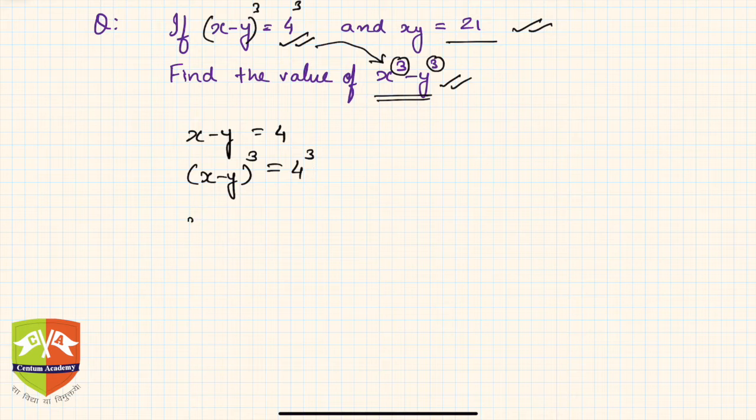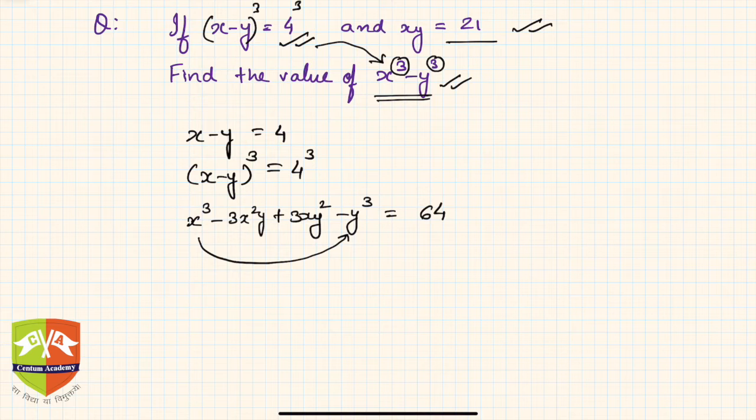Now we know x minus y whole cube, by our identity knowledge we know this is nothing but x cube minus 3x squared y plus 3xy squared minus y cube, and this will be 64. 4 cube is 64. Now we have to basically find these two, so let us see what it is.